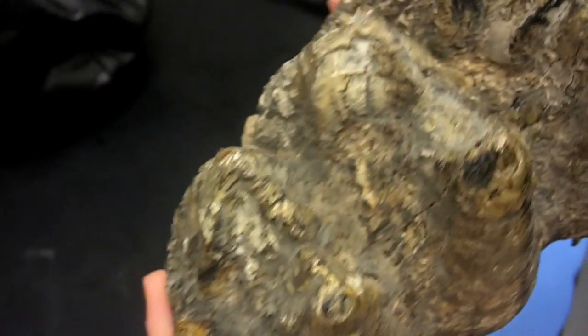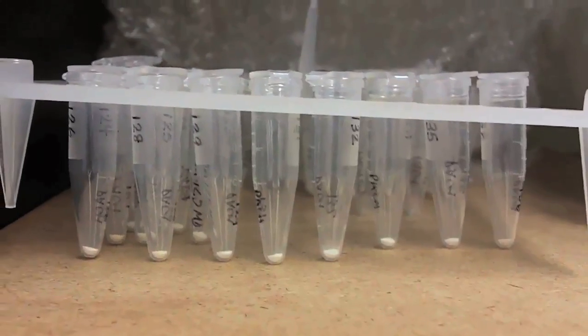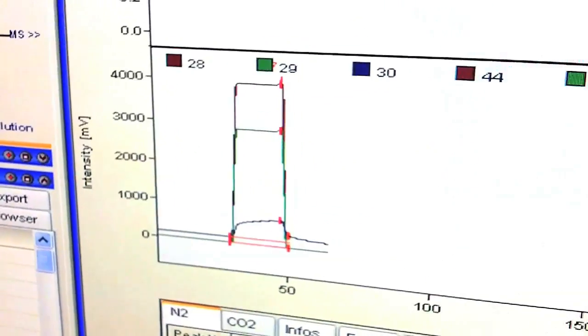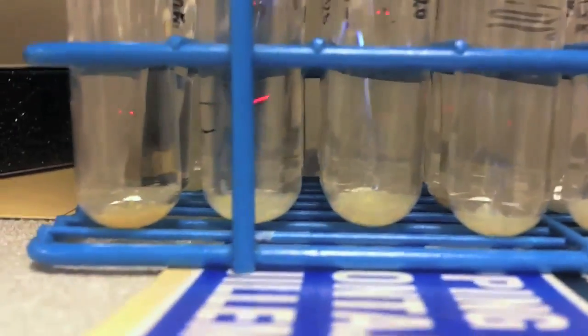A stable isotope is an atom of an element that doesn't decay over time, and every element has different isotopes. For example, nitrogen has nitrogen-15 and nitrogen-14, and the ratio of those isotopes in a sample depends on different things like what an animal ate or how long it was nursing.